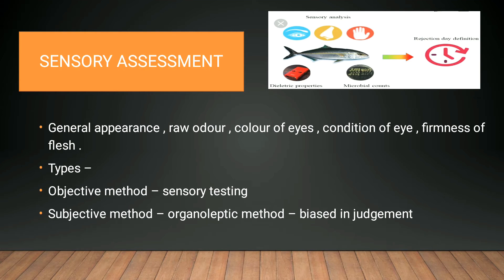In quality assessment, we can do sensory assessment or chemical methods. In the sensory method, it can be subjective or objective. In subjective methods, we are mainly concerned with the organoleptic method, but there can be bias in judgment, so it is not a very reliable method. The main purpose during sensory assessment is the objective method, since we can detect any kind of spoilage using our sensory organs.